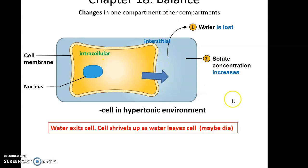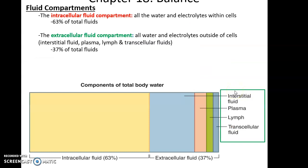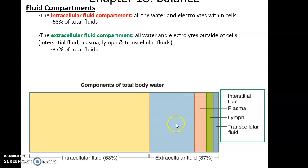Changes in one compartment will affect the other compartments - changes in the fluid surrounding cells will affect the composition of fluids inside the cell. The intracellular fluid compartment holds about 63% of our total fluids. Within the extracellular fluid compartment, we have 37% of total fluids - water and electrolytes outside of cells - including interstitial fluids, blood plasma, lymph fluid, and transcellular fluids.